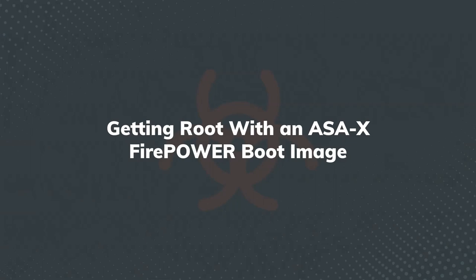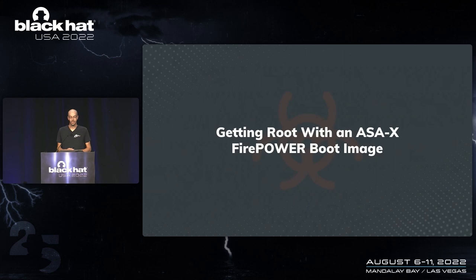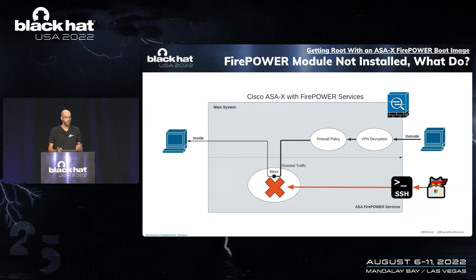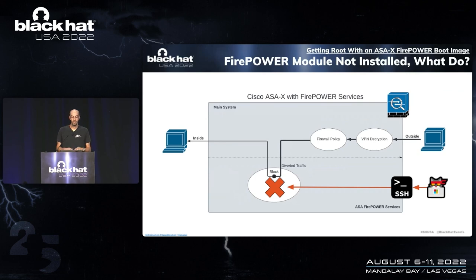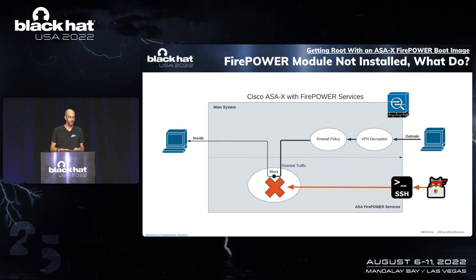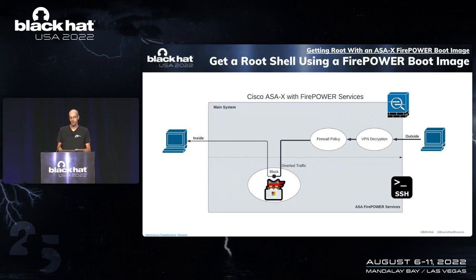We're going to switch our focus to abusing the installation of the Firepower module. Nothing in the remainder of this talk is actually considered a vulnerability by Cisco, but I'll let you be your own judge on that matter. Interestingly, the Firepower module is an add-on package, kind of like the ASDM package — it has to be installed. The ASAX works totally fine without it. So a scenario where HackerCat has SSH access from the internet but the Firepower module isn't installed isn't that far-fetched. Without the Firepower module installed, HackerCat can't access that special root shell.